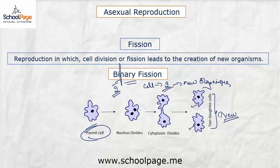Two new cells are present after the process. So binary fission is a kind of fission in which a parent cell divides into two new daughter cells.